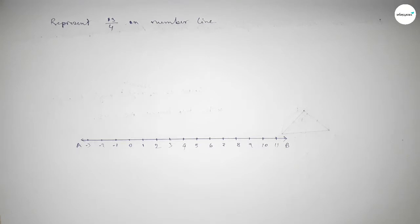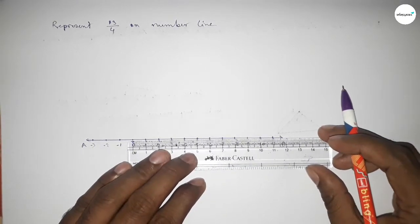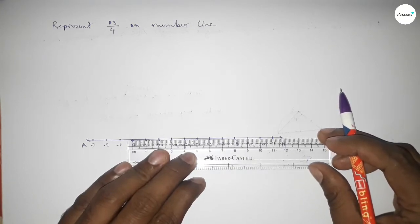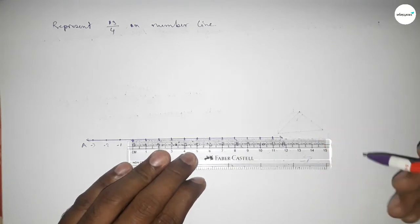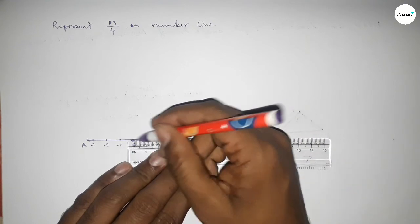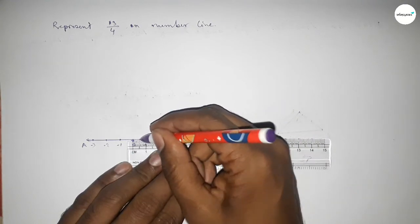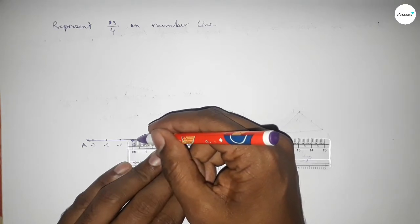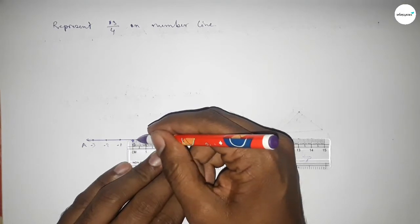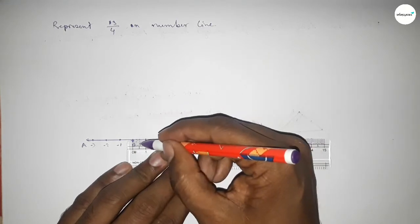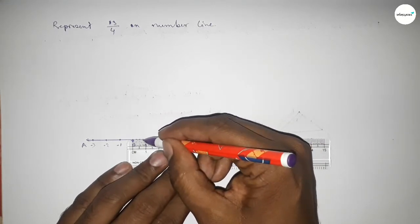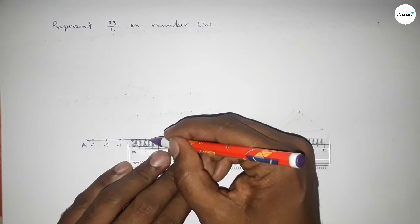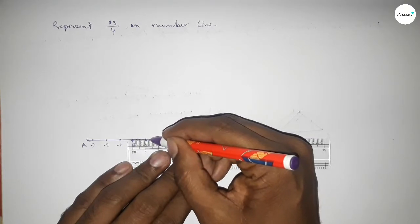Now we have to divide the distance between any two numbers into four equal parts. First dividing the distance into two parts, then divide it into four parts. Dividing the distance between zero to one — this is half. Then dividing the distance between zero to 0.5, so this is 0.25 approximately. Again divide the distance between 0.5 to one, so this is 0.75 approximately. Similarly between one to two, first taking the half.